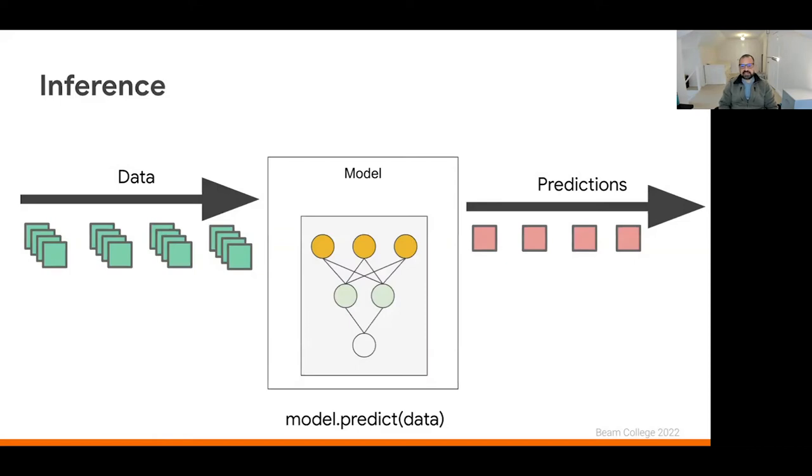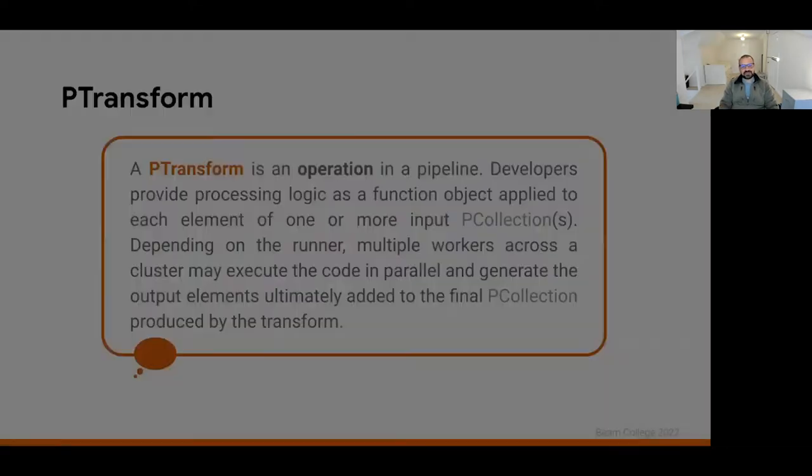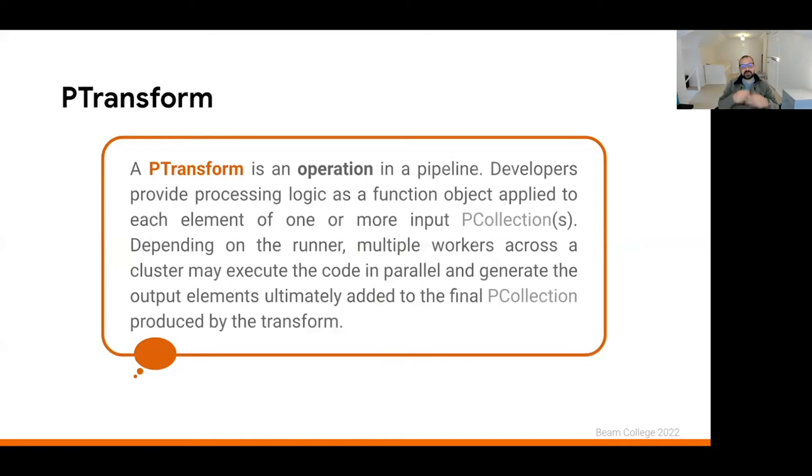So with that, just thinking about inference itself. This is the activity of taking a trained model, providing data to the first layer of that model and calling a prediction against it. For example, it may be in the syntax model.predict and getting predictions out of the model. Now, if we look at this pattern and refer back to our standard P transform, which is the operation that we have in a beam pipeline here, we can encapsulate the code for making the prediction.